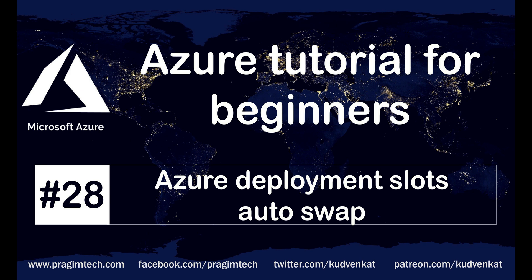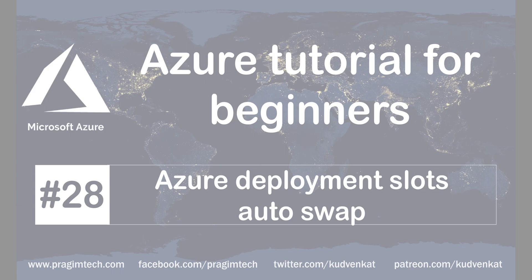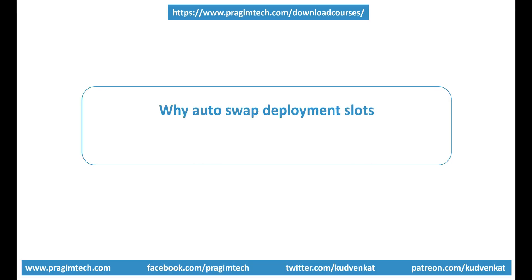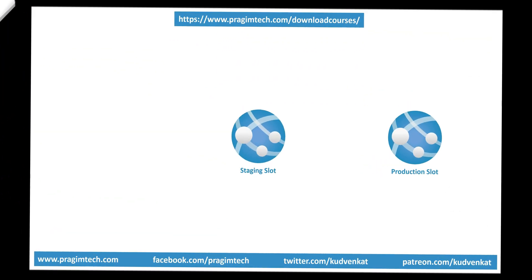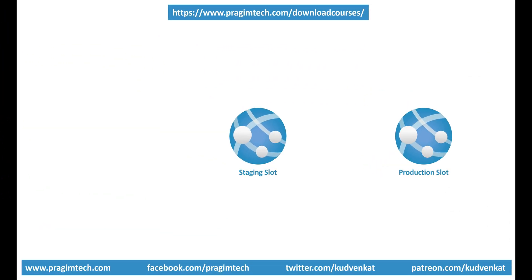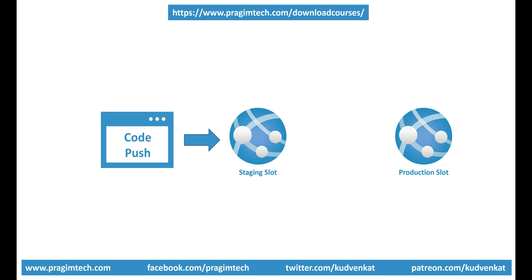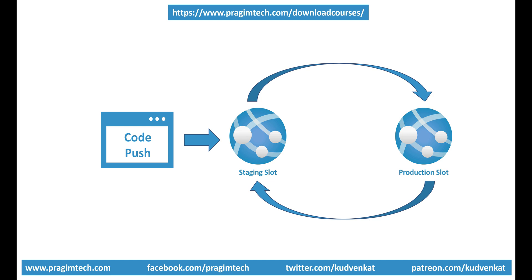This is part 28 of the Azure tutorial. In this video, we'll discuss how to auto-swap deployment slots in Azure. Auto-swap allows us to deploy our app continuously with zero downtime. When auto-swap is configured, for example from staging to production deployment slot, every time we push code into the staging slot, it is automatically swapped into the production slot without any manual intervention, and that too after it is warmed up in the source slot. This means we're able to deploy with zero downtime.